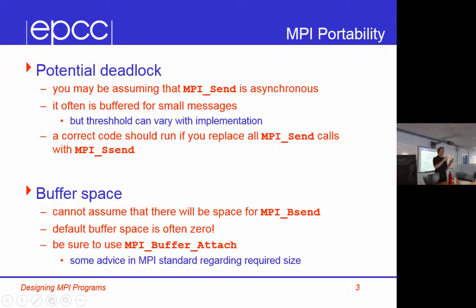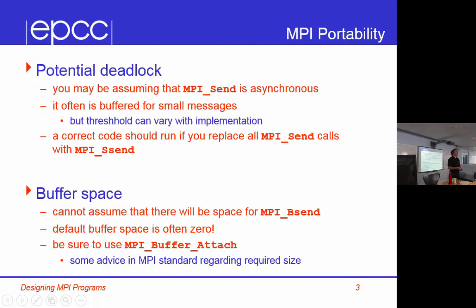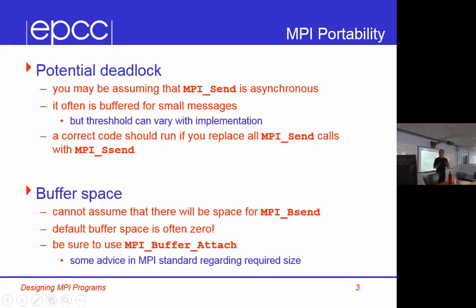A correct code should run if you replace all MPI send calls with MPI ssend. The typical mistake people make in debugging is they have somewhere the code works correctly and somewhere it works incorrectly, and they spend all the time working on the incorrect code. No, you should go back to the correct code and start kicking it to see how you can break it. So in the code you think is correct, replace all the sends with ssends. If that code then doesn't work, you've got a bug.